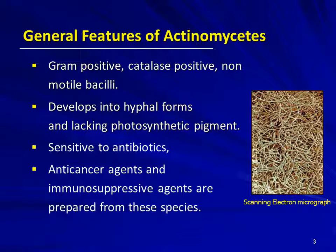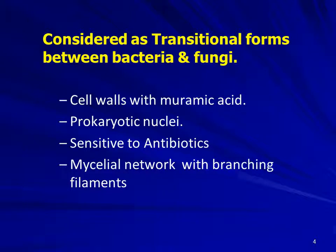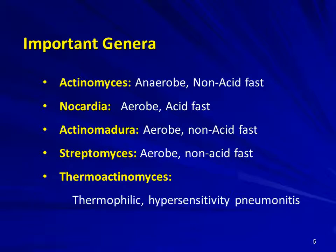Actinomycetes are gram-positive, catalase-positive, non-motile bacilli which assume branching filamentous structures. They lack photosynthetic pigment and are sensitive to antibiotics. Some anti-cancer and immunosuppressive agents are prepared from this species. They are considered transitional forms between bacteria and fungi because cell walls contain muramic acid, prokaryotic nuclei are present, and they are sensitive to antibiotics. The mycelial network with branching filamentous structures is suggestive of fungi.